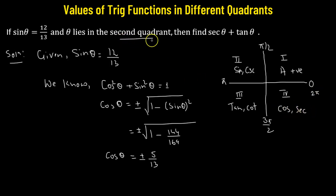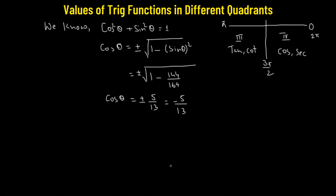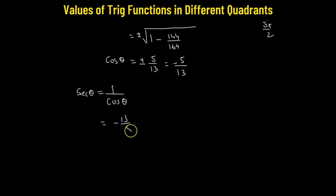Since theta is in the second quadrant, only sine and cosecant functions are positive. That means we have to consider the negative value of cosine theta, so cosine theta equals negative 5 over 13. Since we have cosine theta, we can immediately obtain secant theta, because secant theta is 1 over cosine theta. So secant theta equals negative 13 over 5. Let's box that value.